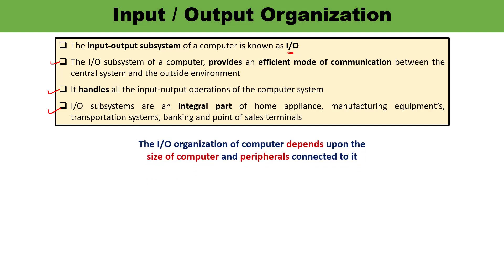IO organization of any particular computer depends upon the size of the computer and how many peripherals are connected to it, or how the peripherals are connected to it. IO organization depends upon two things: size and peripherals.